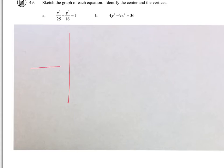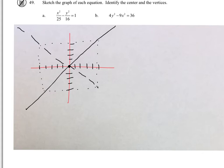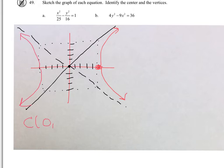For problem 49A, that's a hyperbola where the center is at (0, 0). I'll go 5 in the X direction and 4 in the Y direction to get my rectangle. I'll draw the asymptotes dashed through the corners. Because X squared is first and positive, it opens in the X direction. The center is (0, 0) and the vertices are at plus or minus 5, 0.